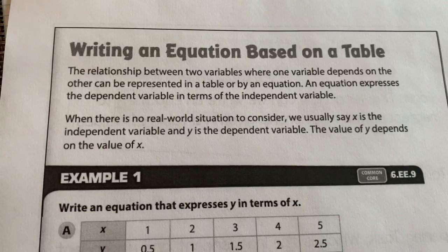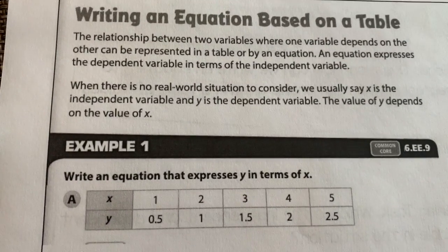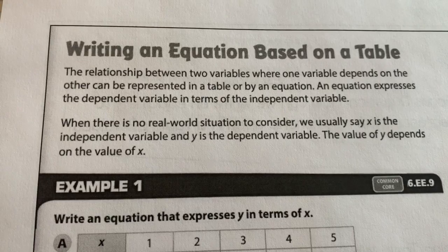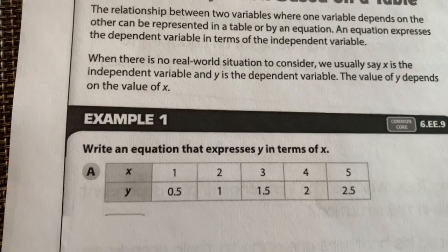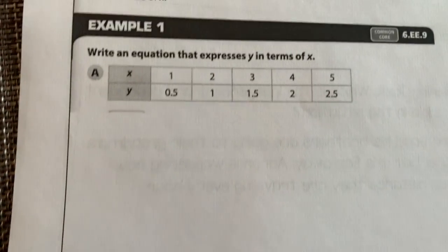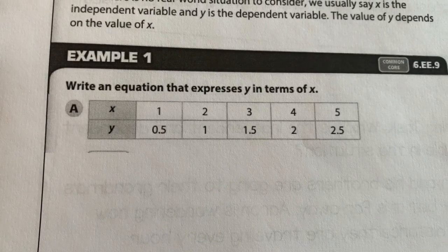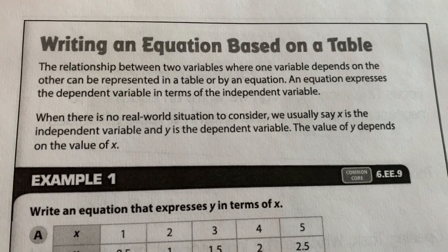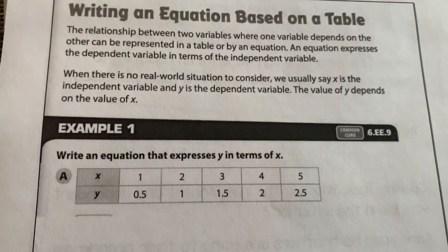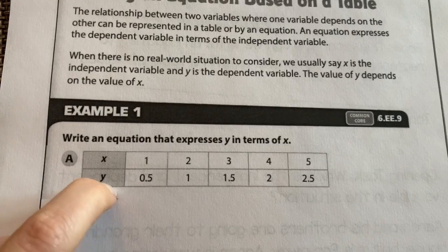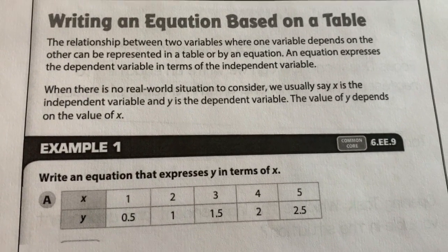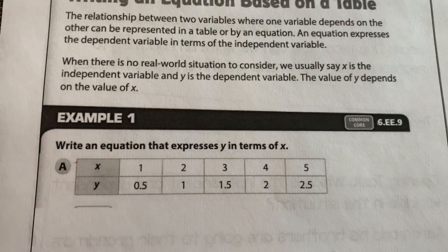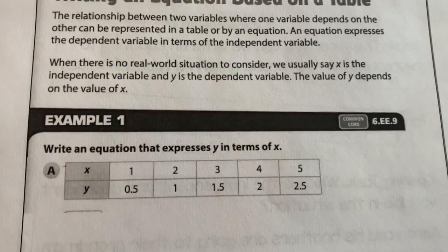To write an equation based on a table, we're going to look at the relationship that's between x and y. The relationship between two variables, where one variable depends on the other, can easily be represented in a table and in an equation. An equation represents the dependent variable in terms of the independent variable. When there's no real-world situation to consider, x is your independent variable and y is your dependent variable. The value of y depends on the value of x, just like we talked about yesterday.